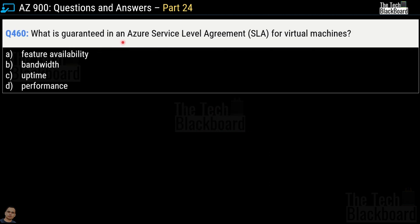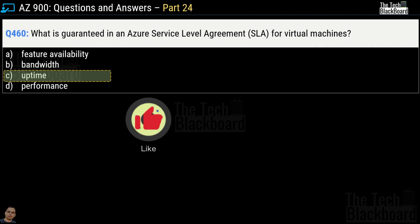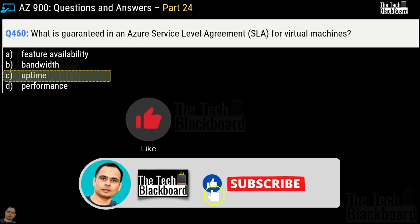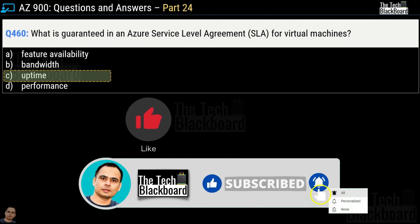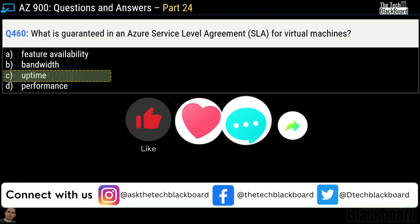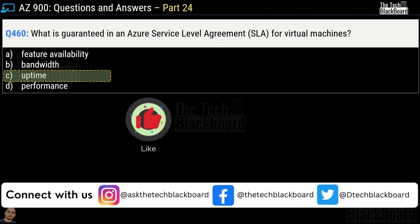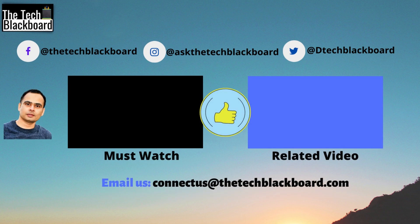Question 460: What is guaranteed in the Azure service level agreement for virtual machines? Options are feature availability, bandwidth, uptime, or performance. The correct answer is option C, uptime. That's all for today. If you gained some value from this video, please like it, subscribe to the channel, select the 'All' notification option, and share our videos on your social media platforms. See you in the next video. Bye.